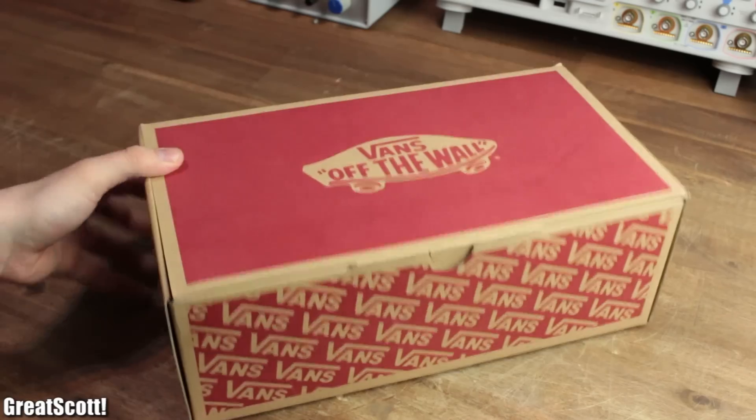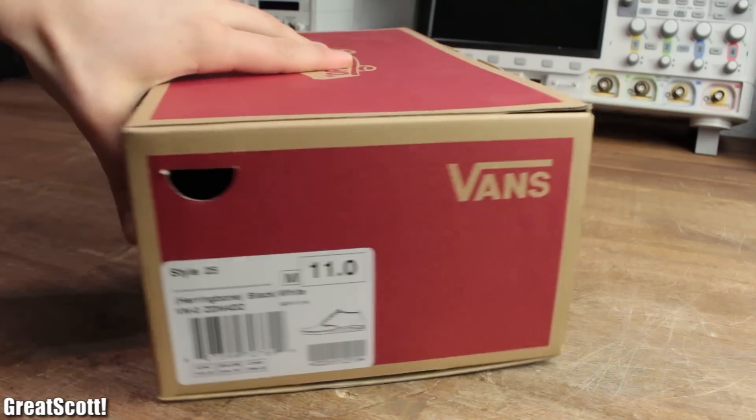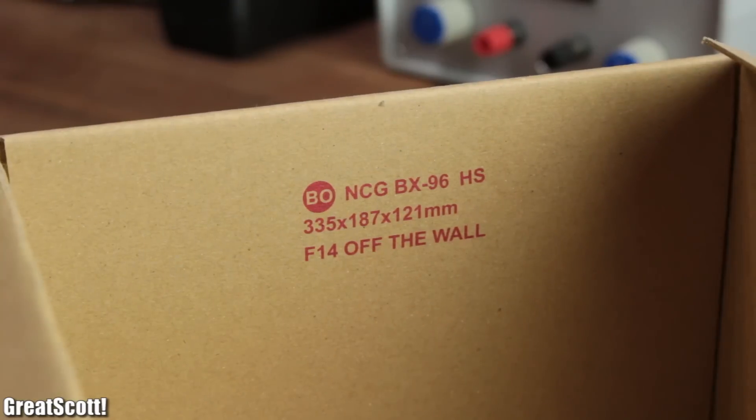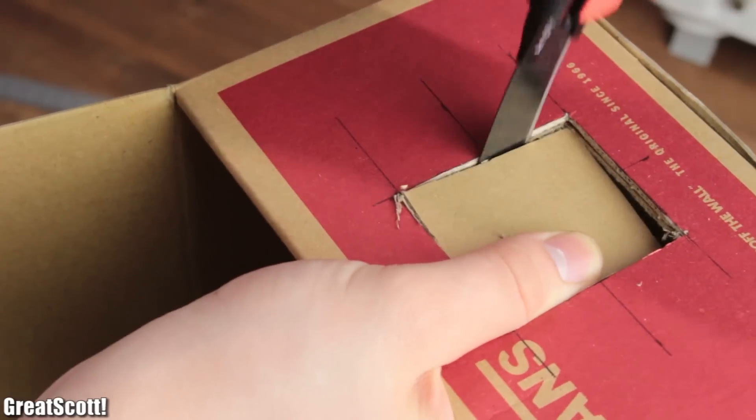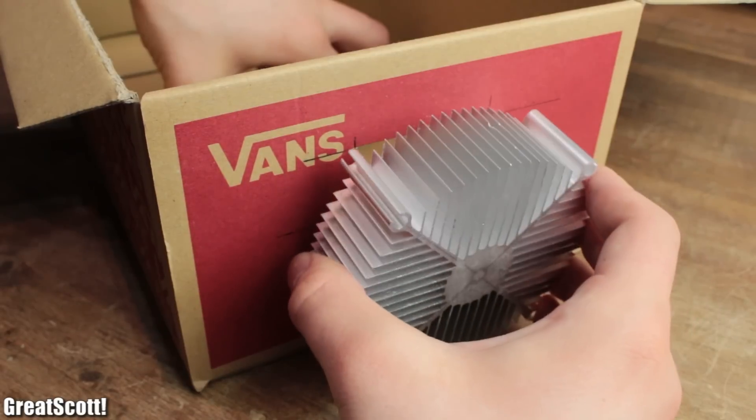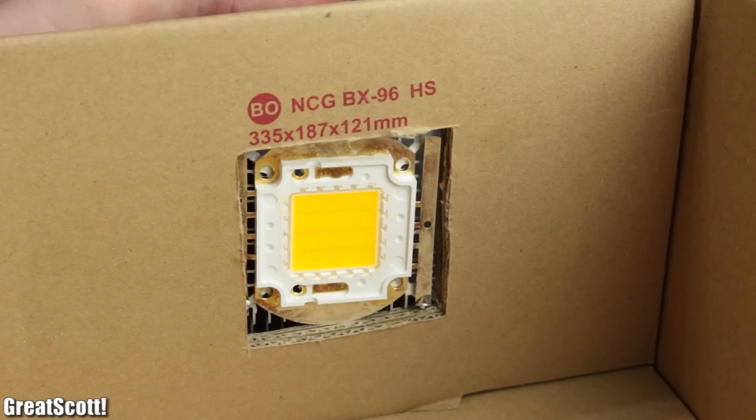To keep the design simple and accessible, I used an ordinary shoebox with these measurements and started modifying it by cutting out a square in the middle of one of the smaller sides so that the LED with heatsink can fit in there snugly.